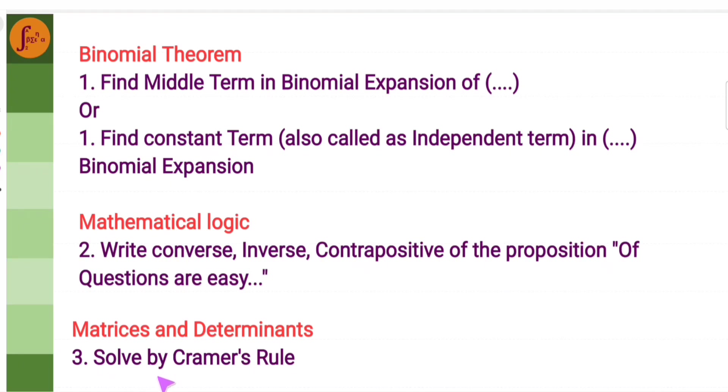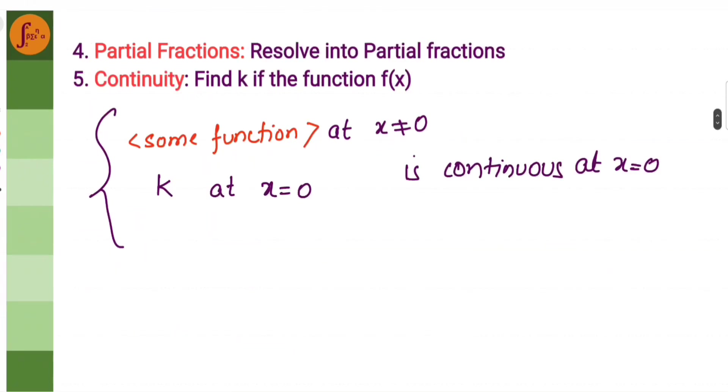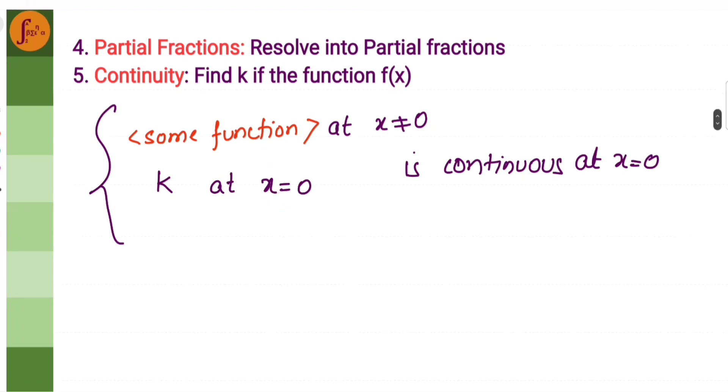Then, third topic is matrices and determinants - focus on the Cramer's rule. Fourth one is partial fractions: resolving into partial fractions. Continuity - this is another important 3 marker. It could be any kind of function. You should be able to find k or r given two functions. You should prove that it is continuous. So, these are key five topics to focus on for 3 markers.